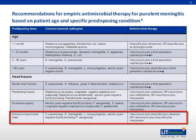For immunocompromised patients, who are at increased risk for Listeria, aerobic gram-negative bacilli including Pseudomonas, in addition to Strep pneumoniae and Neisseria, you want to add ampicillin in addition to vancomycin and cefepime, or vancomycin and ceftriaxone.